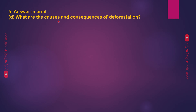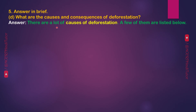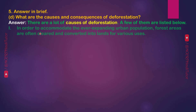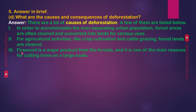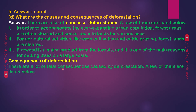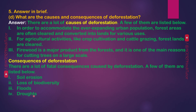What are the causes and consequences of deforestation? Causes: First, in order to accommodate the ever-expanding urban population, forest areas are often cleared and converted into lands for various uses. Second, for agricultural activities like crop cultivation and cattle grazing, forest lands are cleared. Third, firewood is a major product from the forest and it is one of the main reasons for cutting trees on a large scale. Consequences: soil erosion, loss of biodiversity, floods, droughts, global warming as a result of climate change, and disruption of the water cycle.